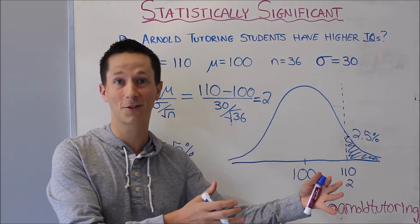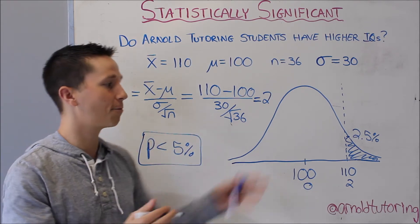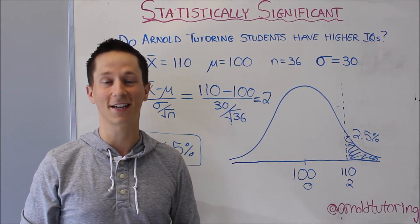So whenever that probability is less than 5 percent, we can say that's statistically significant.